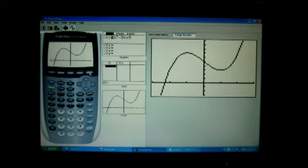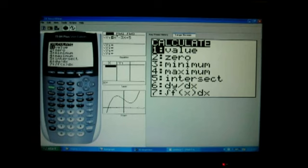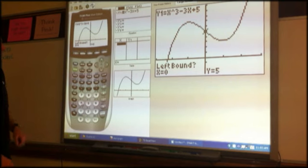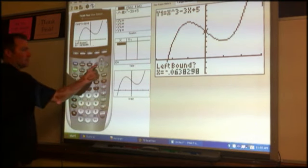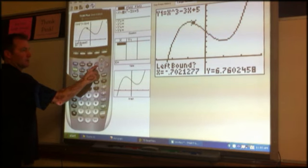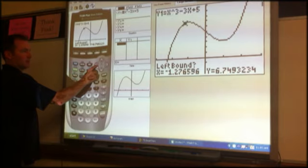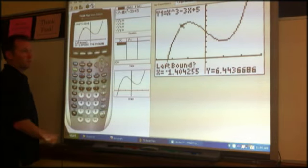So to calculate the maximum, I went to 2nd and then calculate there, and I want to choose number 4 right here, the maximum. And it asks me for the left bound. So one way to do this is just to move... if you look at where the cursor is, that's about the maximum right there. So I'm going to go a little bit to the left of it and press enter.